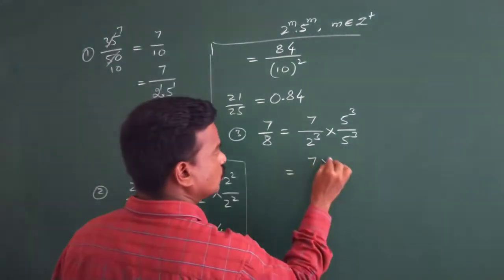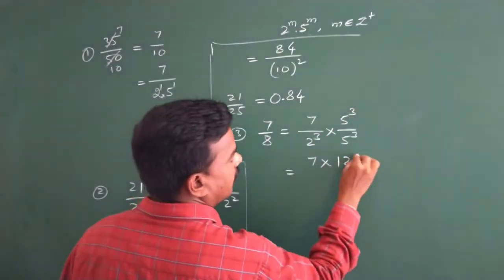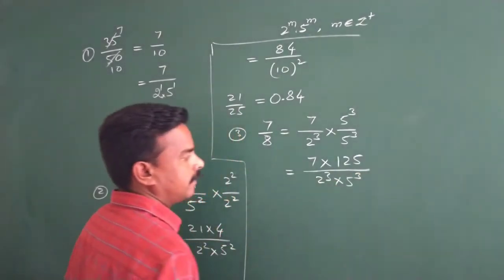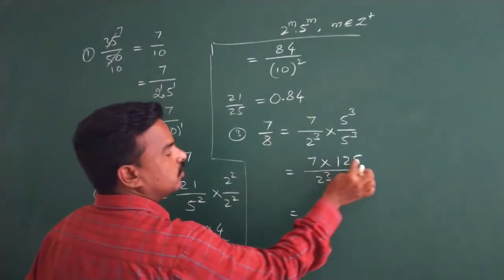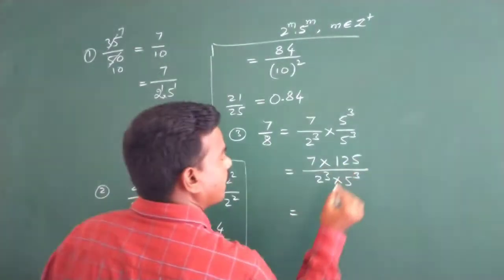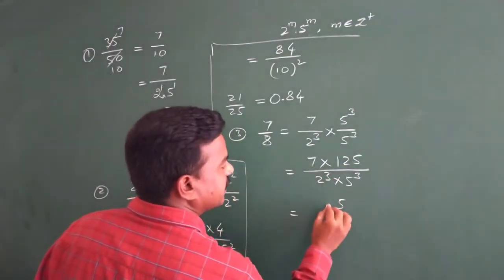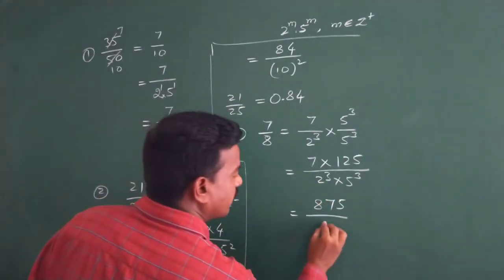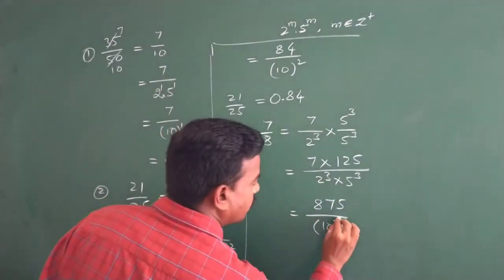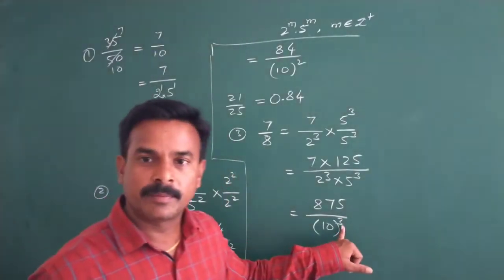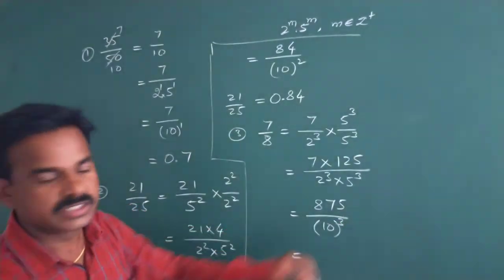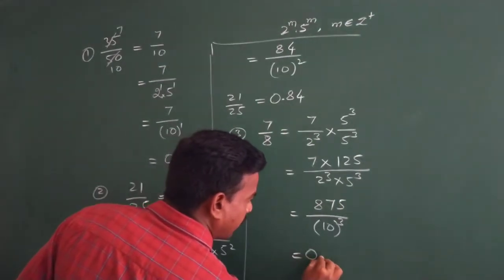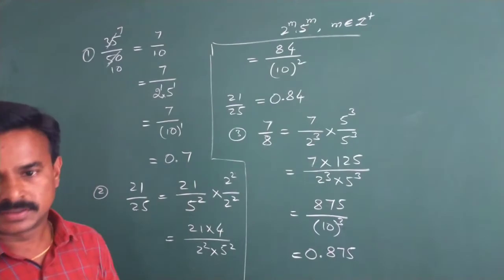So it equals 7 into 5 to the power of 3, divided by 2 to the power of 3 into 5 to the power of 3, which equals 10 to the power of 3. The power is 3, so the decimal point is placed before 3 digits. 7 times 125 equals 875, giving us 0.875 as the answer.